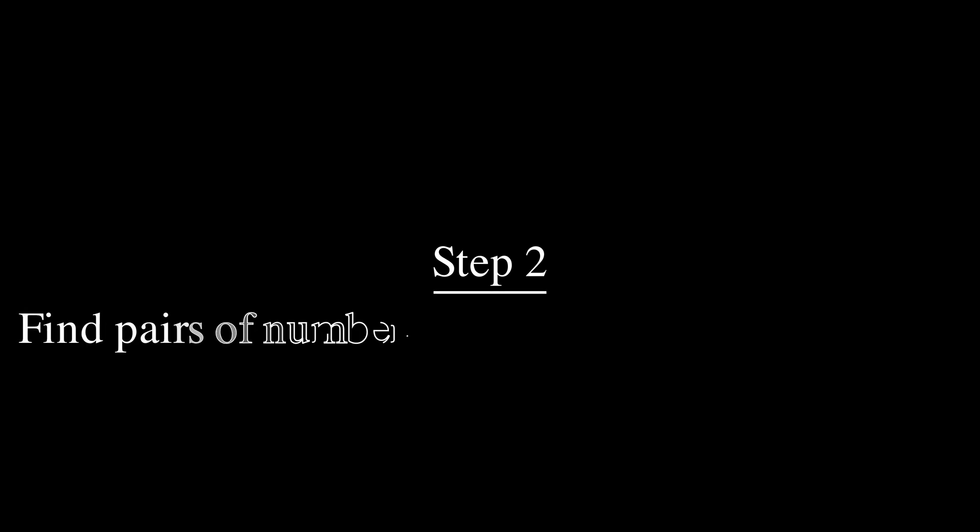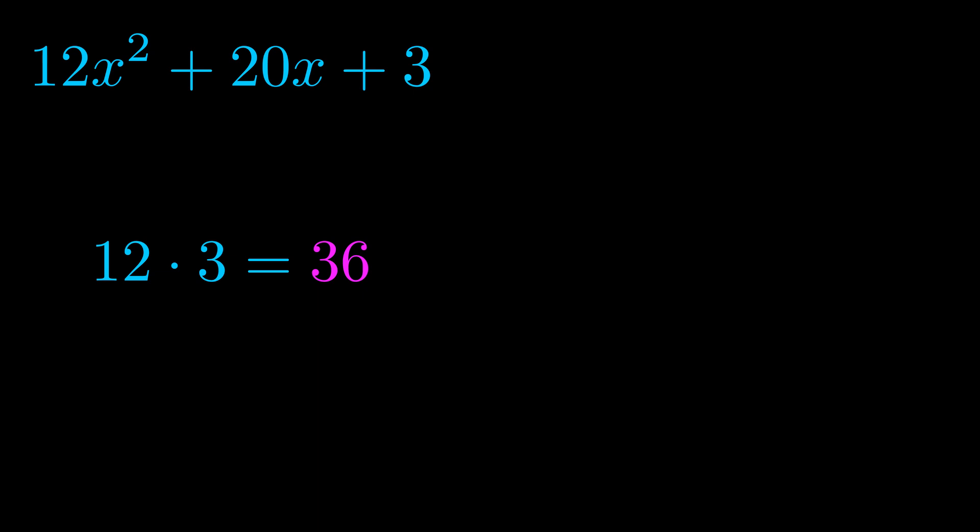Step two is to try to find all of the pairs which multiply to this number. Now it turns out you don't really need to find all of them, but go ahead and write down as many numbers as you can that multiply to the magenta value for now. Pause the video and resume when you're ready to continue.